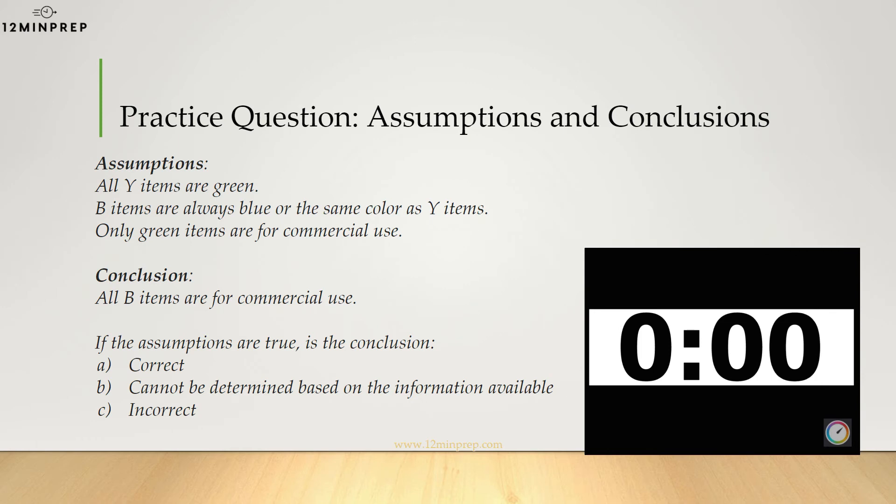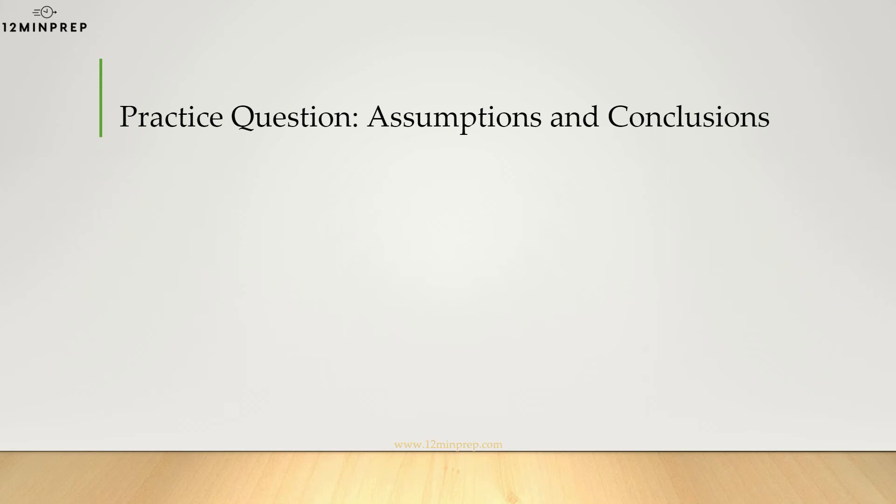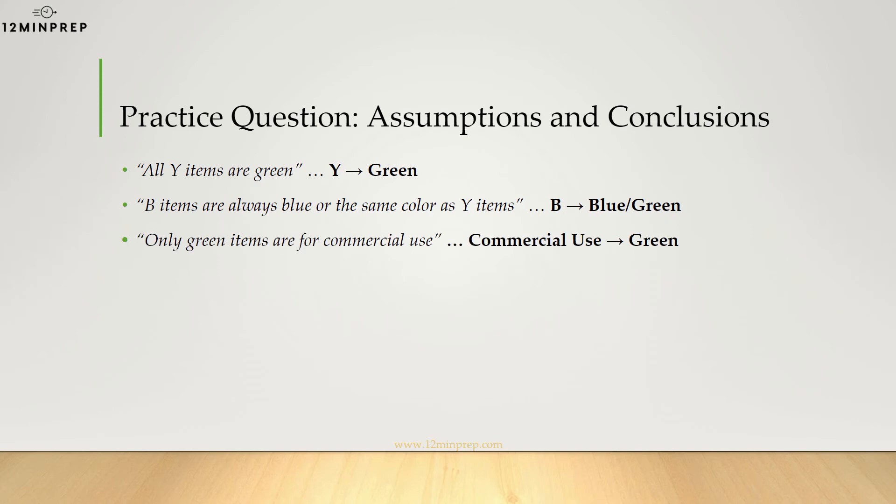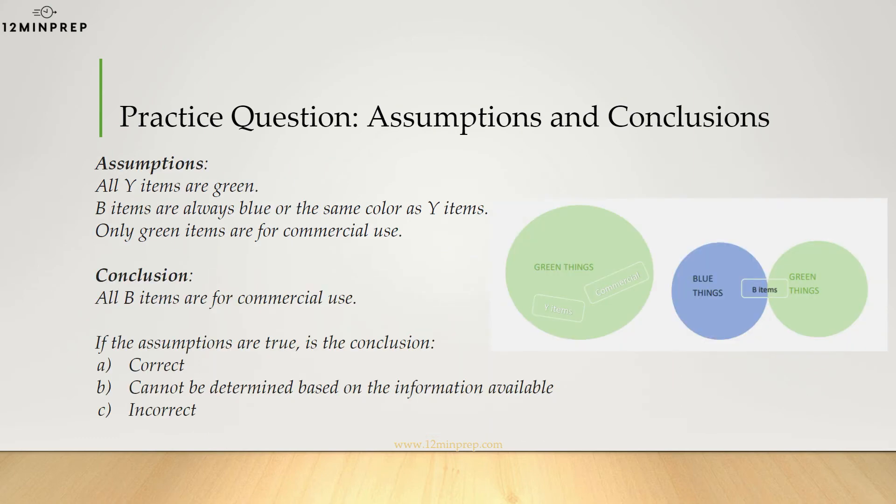The correct answer is C. The conclusion is incorrect. Let's take a quick look at how we get to the answer. First, let's try to turn those sentences into something more digestible. All Y items are green can be written as Y arrow to the right green. B items are always blue or the same color as Y items turns into B arrow to the right blue forward slash green. And only green items are for commercial use turns into commercial use arrow to the right green. Here's an illustration to help visualize these statements. The conclusion states that B arrow to the right commercial use, but we can see in the illustrations that items for commercial use can only be green while B items can also be blue. There we go, conclusion refuted, and we pick incorrect as the right answer choice, which is answer C.